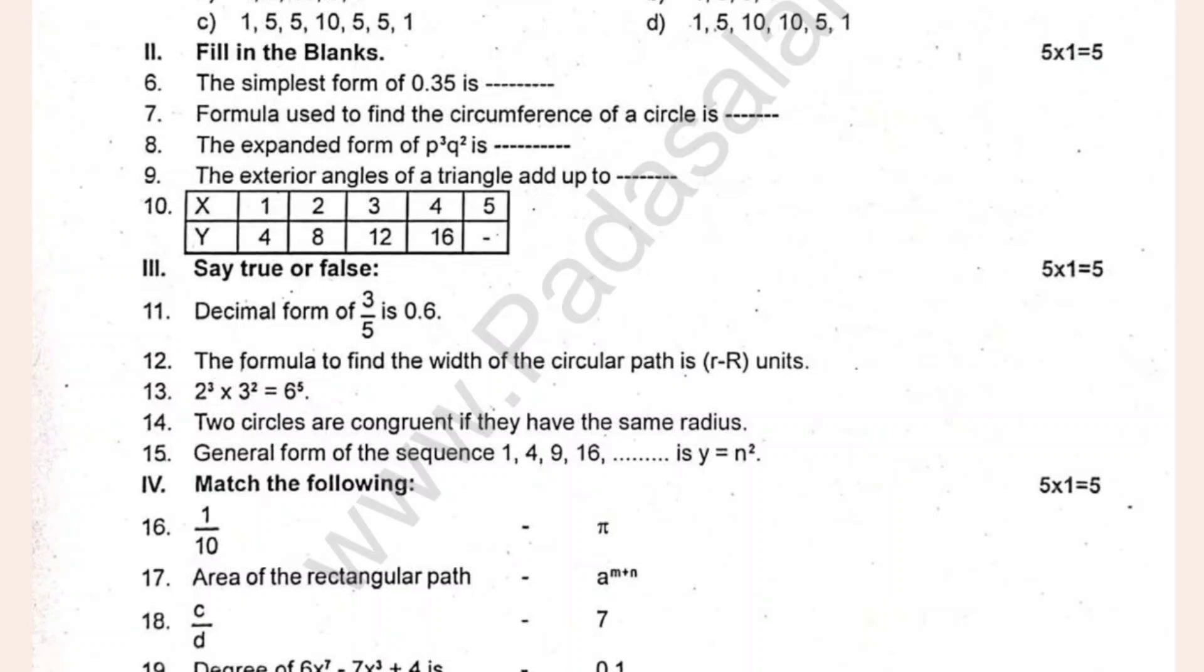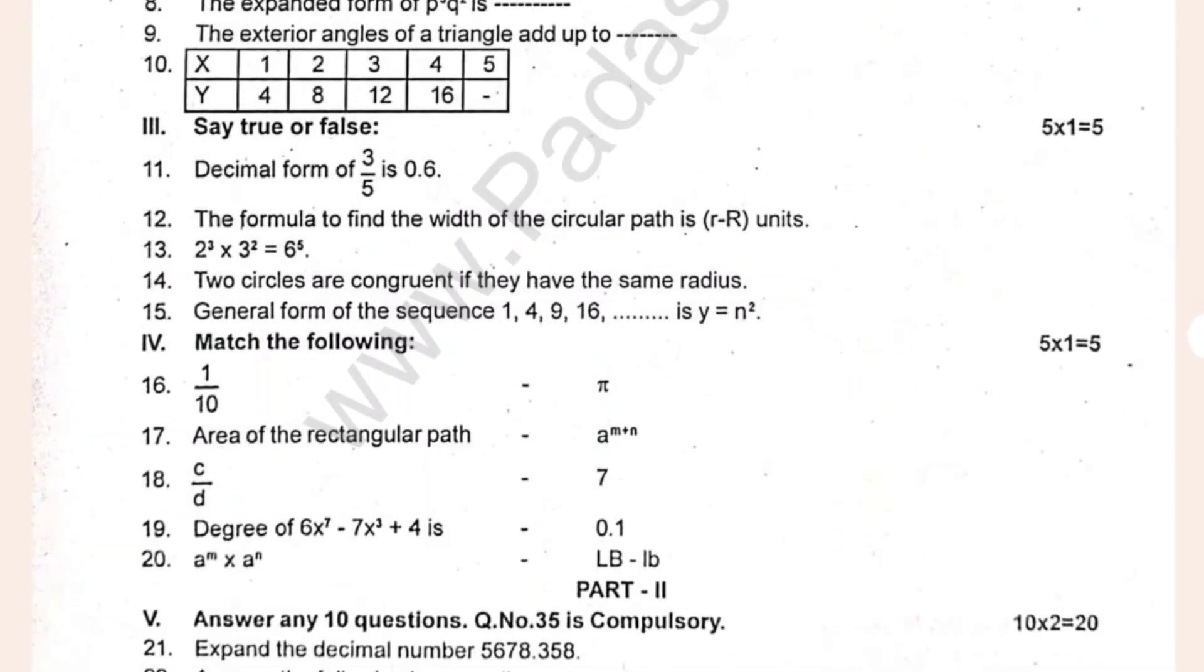The simplest form of 0.35 is. The formula is used to find the circumference of a circle is. Then, the expanded form of p³q³ is dash. Now, let's see the decimal form.